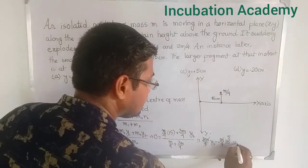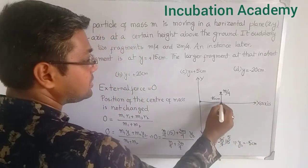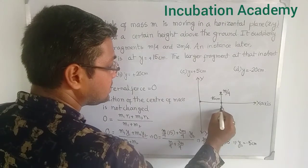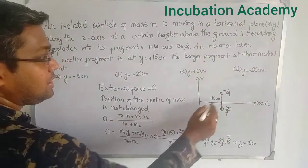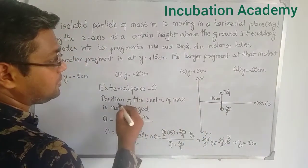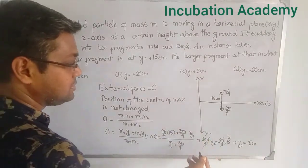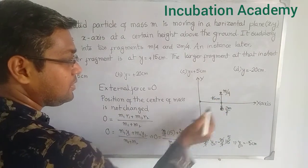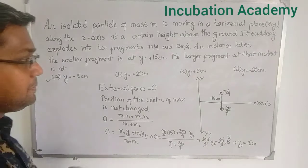So y2 = −5 centimeters, which means the 3m/4 fragment is at a distance of 5 centimeters along the negative y-axis at the instant when the m/4 fragment is at +15 centimeters. There is no change along the x-axis, so x = 0 for both fragments — for m/4, x is 0, and for 3m/4, x is also 0. That is the answer. Thank you.